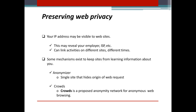Why do we need to preserve web privacy? Because our IP address may be visible to websites, and this may reveal our employer, internet service provider, etc. This can also link activities on different sites at different times. Some mechanisms exist to keep sites from learning information about ourselves, like anonymizer and crowds. Anonymizer is a single site that hides the origin of web requests, and Crowds is a proposed anonymity network for anonymous web browsing.